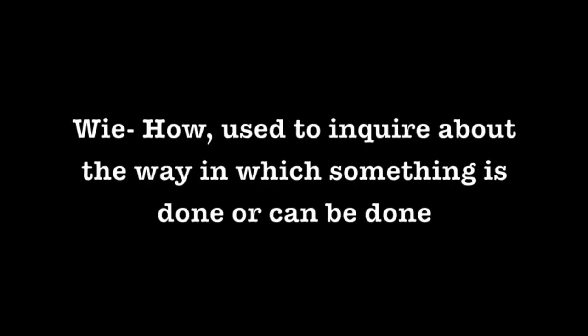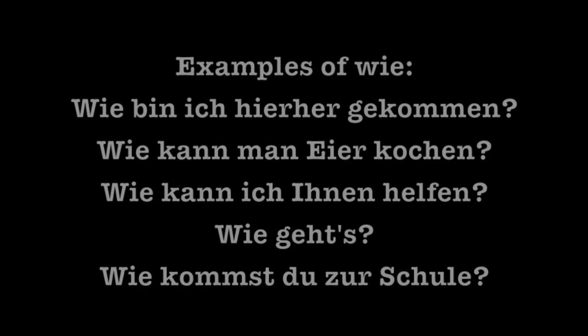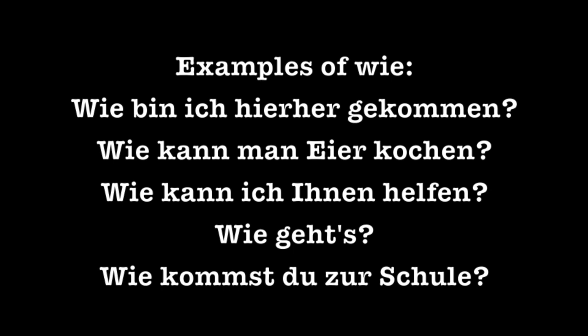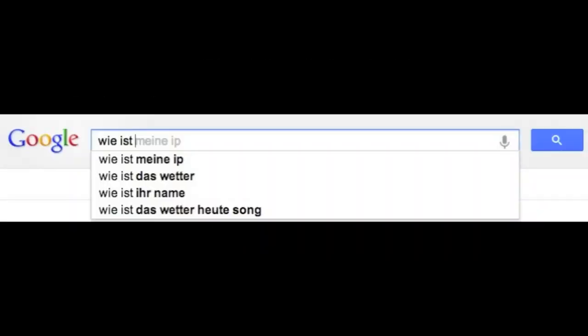The next question word is Wie, which means 'how'. It's used to inquire about the way in which something is done or can be done. Examples: Wie bin ich hierher gekommen (how did I get here?) — which is what Desmond the bear says on the German version of the ASDF movie — Wie kann man Eier kochen (how can one cook eggs?), Wie kann ich Ihnen helfen (how can I help you?), Wie geht's (how's it going?), Wie kommst du zur Schule (how do you get to school?). Googling 'Wie ist' returns: Wie ist meine IP (what is my IP address?), Wie ist das Wetter (how is the weather?), Wie ist Ihr Name (what is your name?), and apparently a song called 'Wie ist das Wetter heute'.